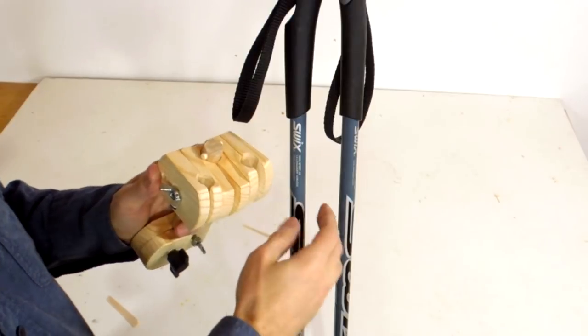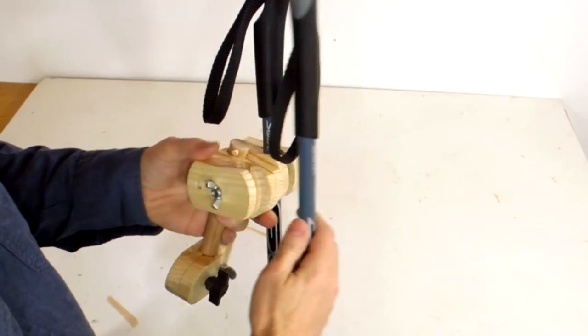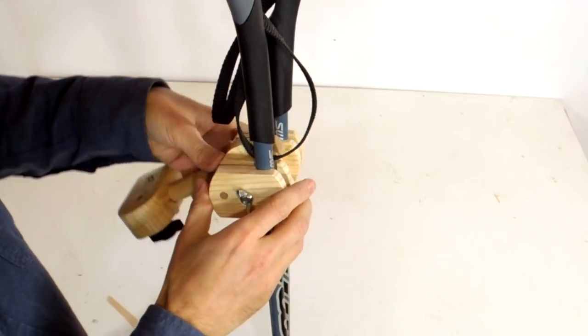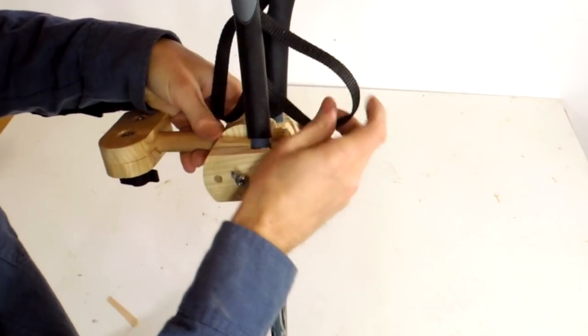So let's twist these things over here. And we pop the ski poles in here one at a time. And now I can tighten this up.